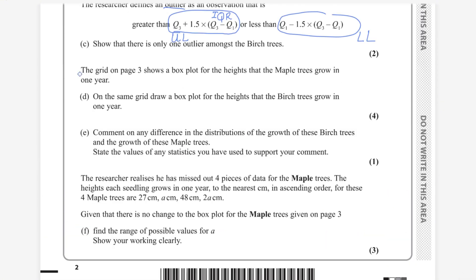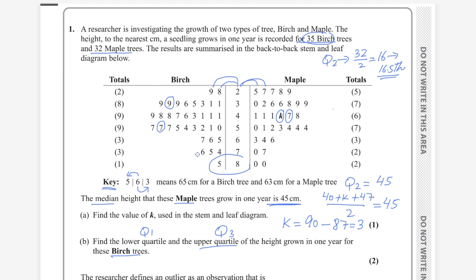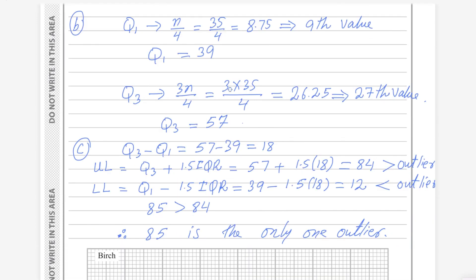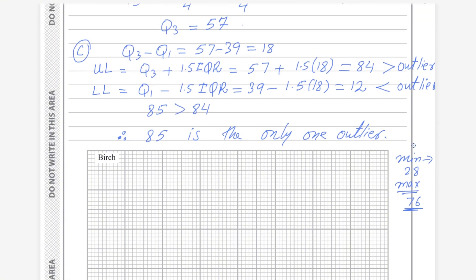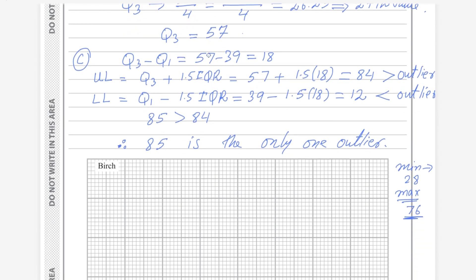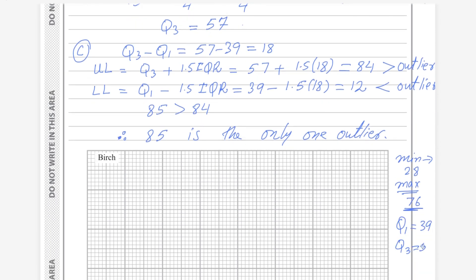Part d: on the same grid as the maple box plot, draw a box plot for the heights that birch trees grow in one year. The outlier is 85 and the maximum value for birch trees is 76, so we draw up to 76. The minimum value is 28. Q1 = 39 and Q3 = 57, which we already found.